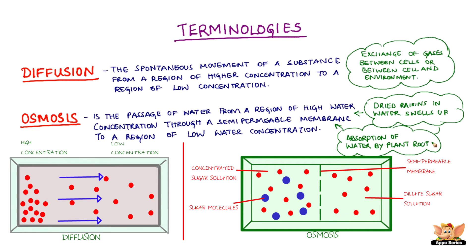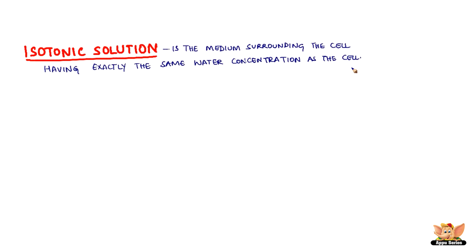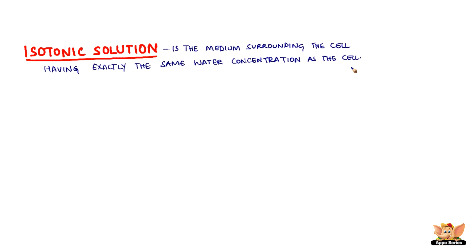Let's understand different types of media that can surround the cell. Isotonic solution is the medium surrounding the cell having exactly the same water concentration as the cell. In this case there is no net movement of water.